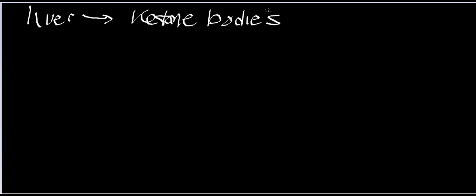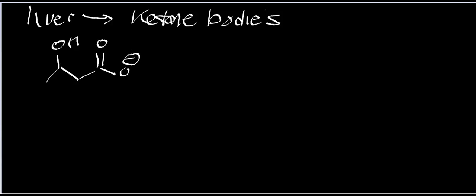In the catabolism of ketone bodies, we're going to start with beta-hydroxybutyrate. Beta-hydroxybutyrate is essentially a four-carbon carboxylic acid or carboxylate — butyrate — with the alpha carbon and the beta-carbon, hence beta-hydroxybutyrate. What's essentially going to happen is we're going to have an equilibrium reaction, and the enzyme that catalyzes this reaction is beta-hydroxybutyrate dehydrogenase.